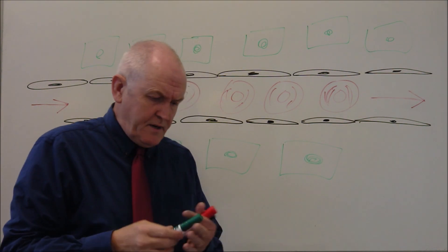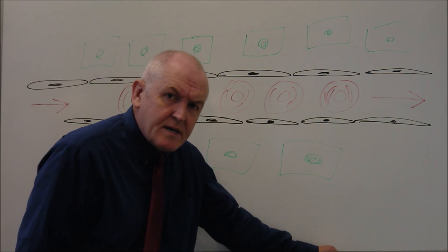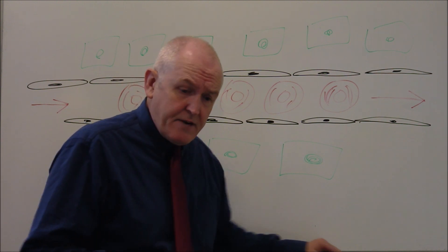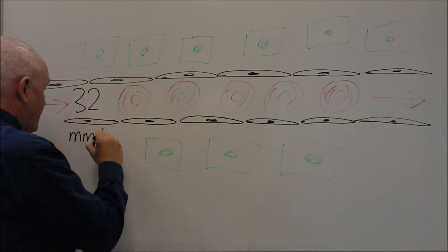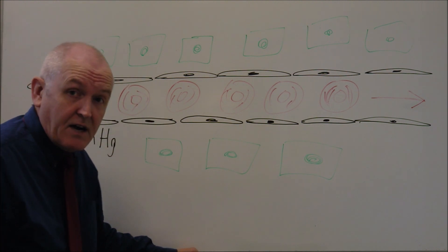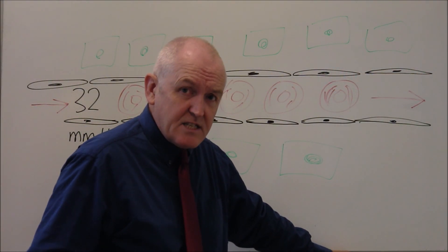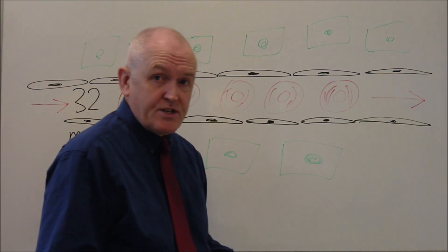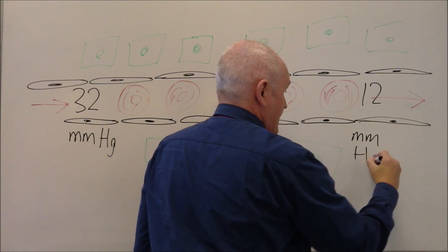When blood enters the capillary from the arteriole, the pressure in the arterial system is higher than in the venous system. At the arterial end of the capillary we might get a blood pressure of about 32 millimeters of mercury, because this blood has just been fed in by the arterial system. As it travels through, the pressure drops, and at the venous end of the capillary it may be about 12 millimeters of mercury.